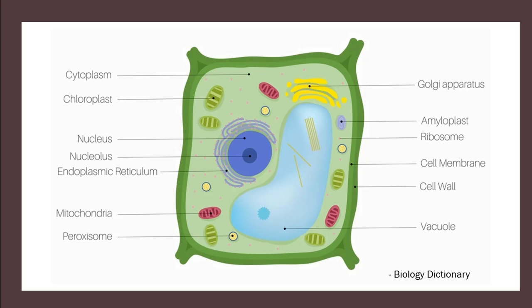Moving on to the plants. Again, we have a plant cell here — you would have looked at this in year seven as well. The thing we're going to focus on today is the chloroplasts. The chloroplasts are the site of photosynthesis. All the other cell components are really good, but we're just focusing on this today. You might even notice there's a little mitochondria in there as well.